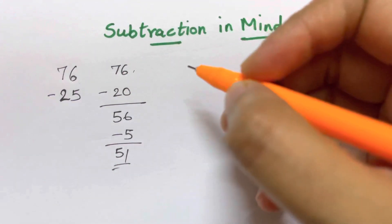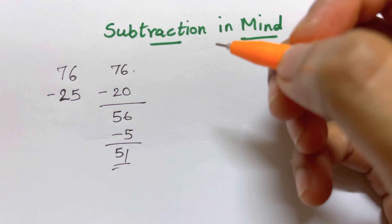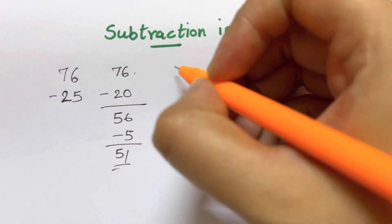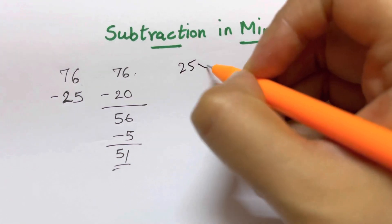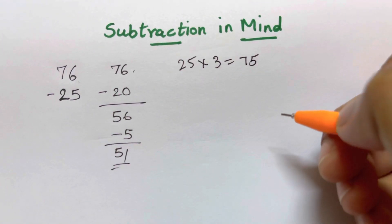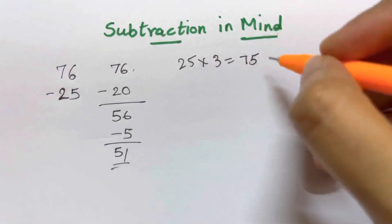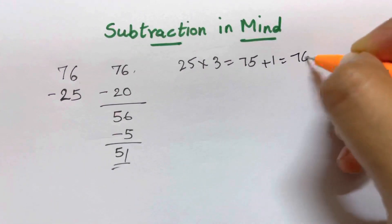76. This is to be like your mind should be creative and very quick to do everything. Now 25 times 3 will give you 75. I think, yes, you're right. So 25 times 3 gives you 75 and 75 plus 1 will give you 76. This is how you know.